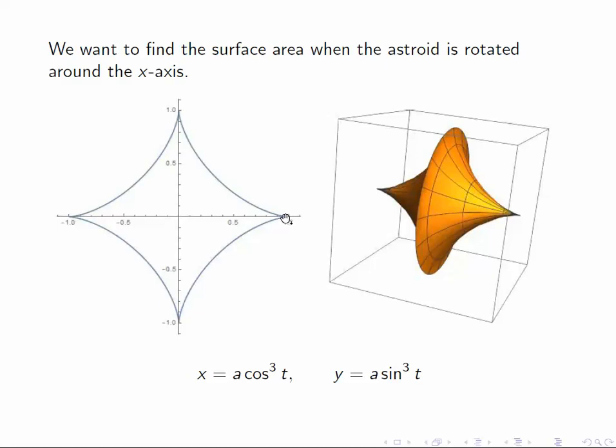As t varies between zero and pi over two, cosine t gradually reduces to zero. So the x-coordinate moves down to zero. And the y-coordinate gradually moves from zero up to one.